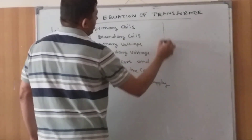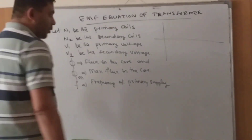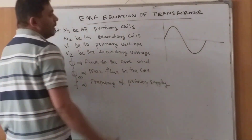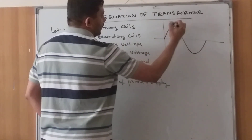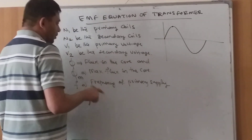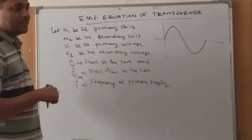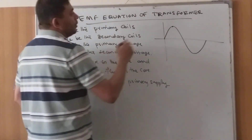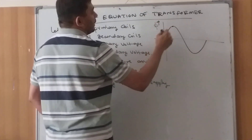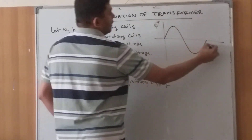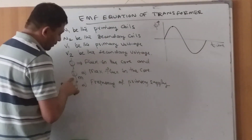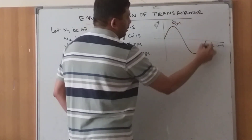In the case of the primary, we are applying an AC voltage. Suppose it is a sinusoidal signal — the voltage keeps changing and reaches a maximum value. The corresponding flux is also sinusoidal because this flux is produced by the supply voltage. Therefore, the flux takes the same shape as the input voltage.